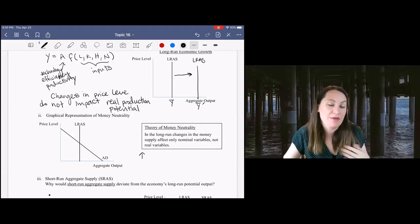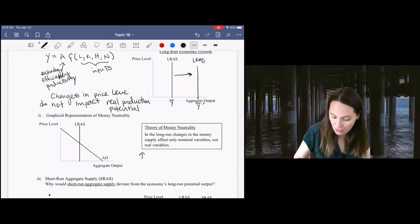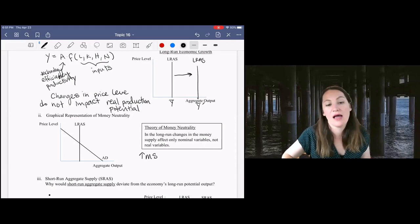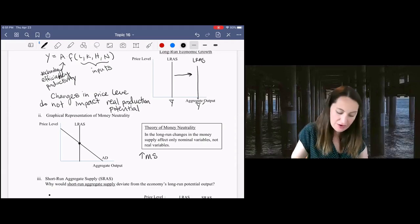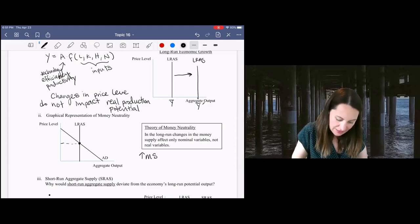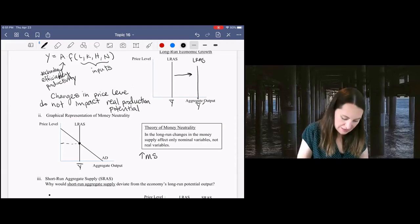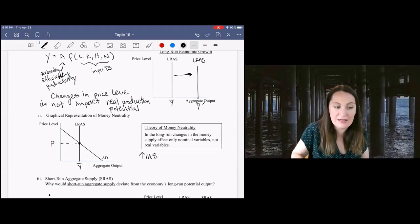we just have long-run aggregate supply and aggregate demand. We want to think about how an increase in money supply would affect this situation. We're starting out here at this long-run equilibrium level of output and this long-run price level.